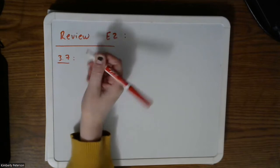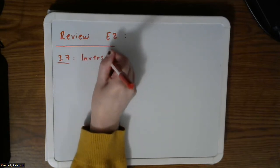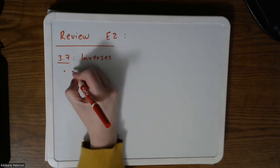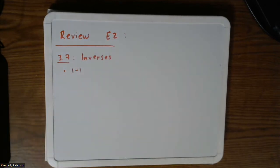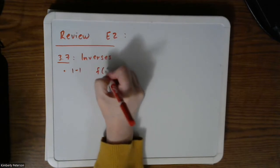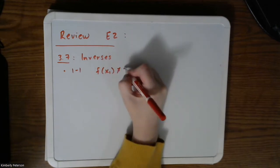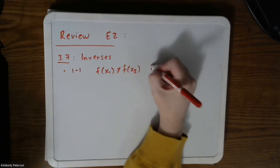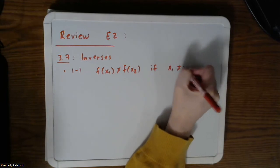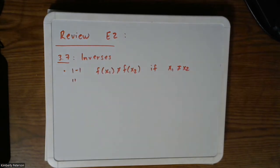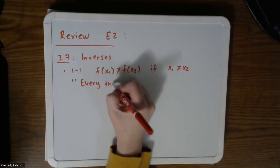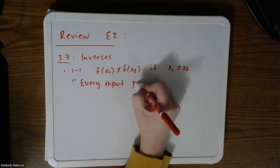So for section 3.7, that was all on inverses. So for 3.7, the first thing that we discussed was the definition of a one-to-one function, and that was my shorthand for one-to-one. So remember, a function is one-to-one if the following is true. The y coordinates will not be equal to each other as long as the x coordinates are not equal to each other. So in maybe an English phrase, every input produces a unique output.